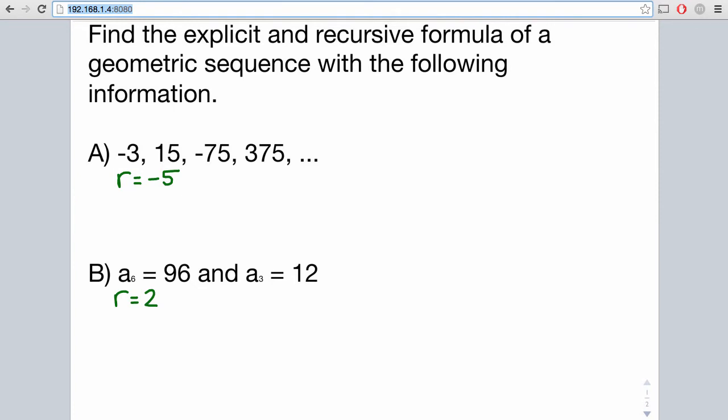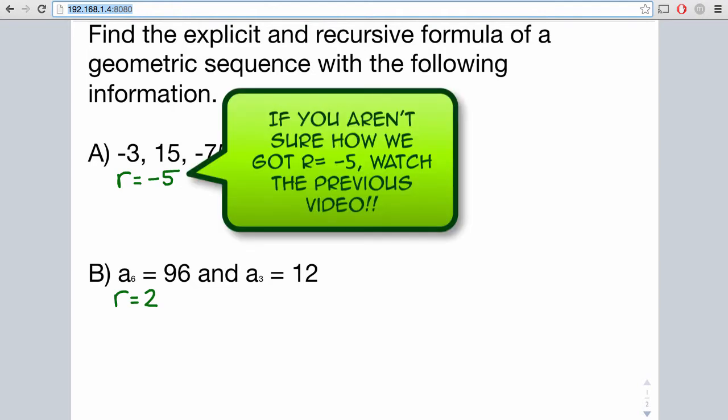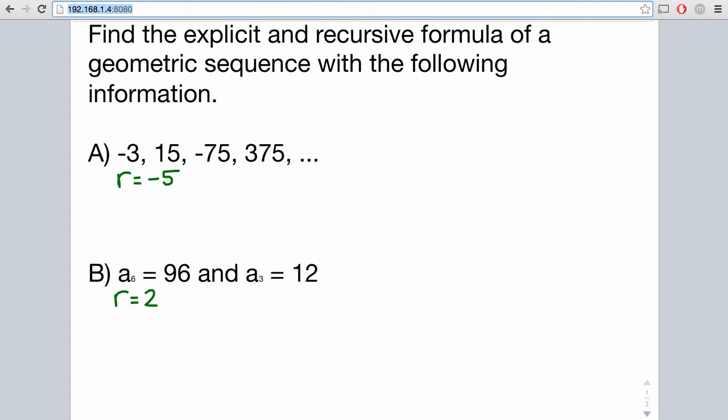So for part A, we're given our sequence as negative 3, 15, negative 75, and 375. In the previous video, we found that the common ratio was negative 5. That is, to find the next term in the sequence, we would multiply the previous one by negative 5.